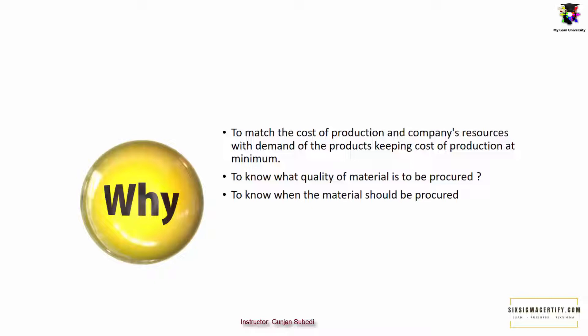Aggregate planning is an intermediate-range capacity planning that normally ranges from 2 to 18 months. It gives us an idea about what quantity of material is to be procured and when should the material be procured.